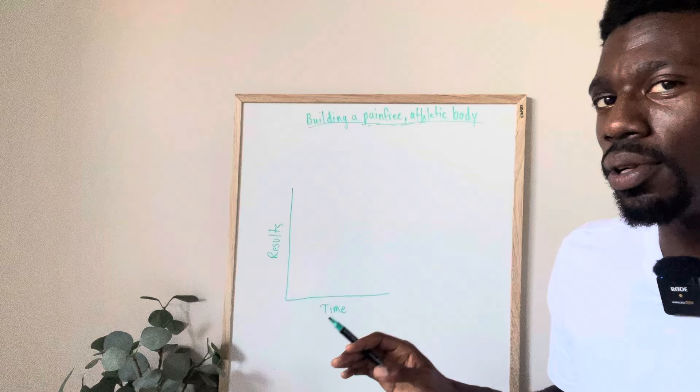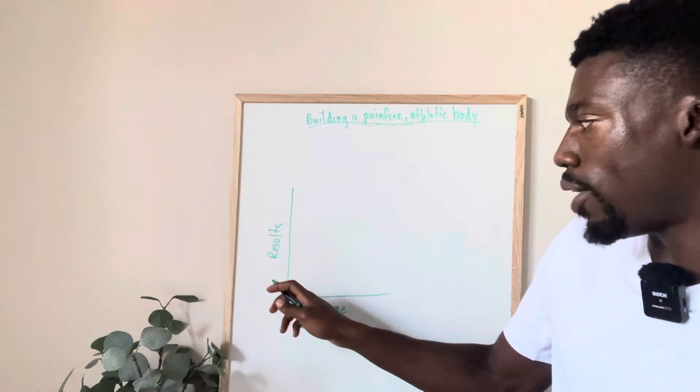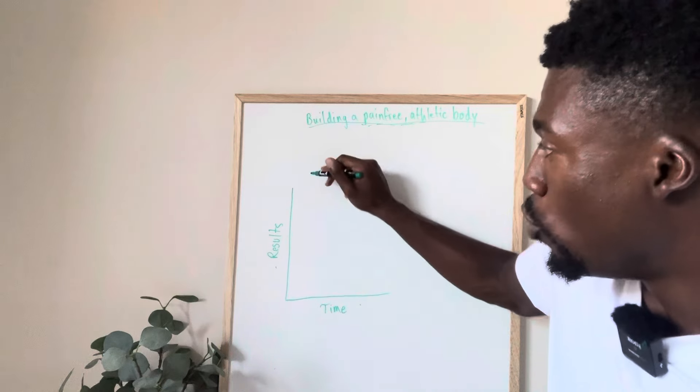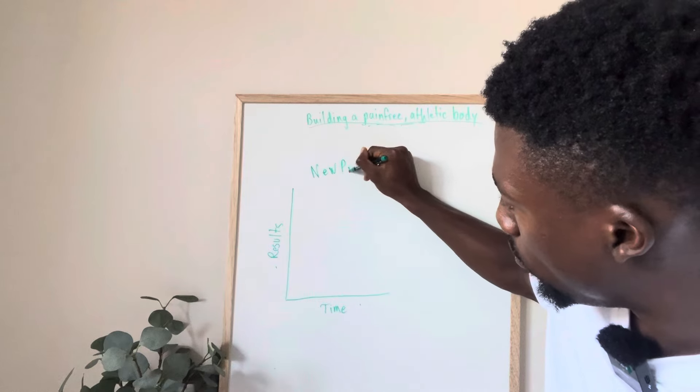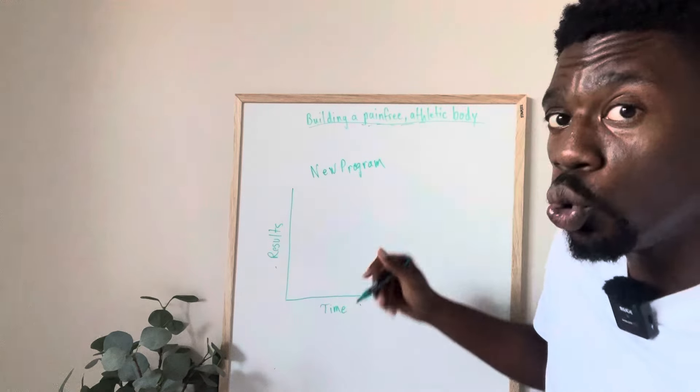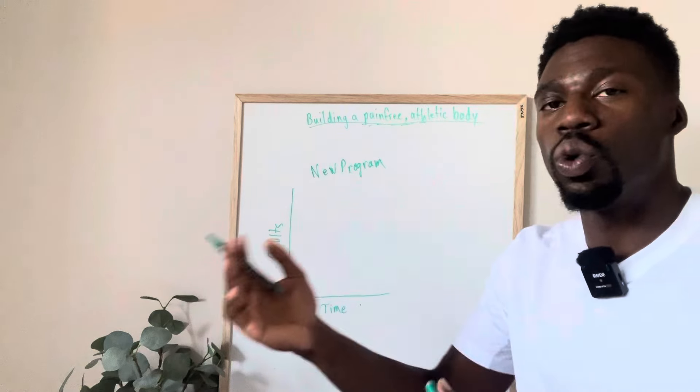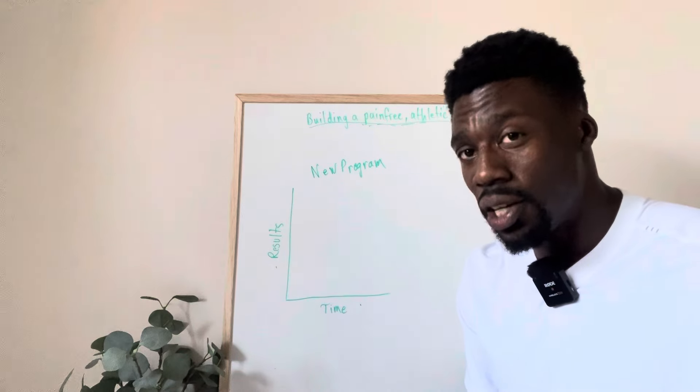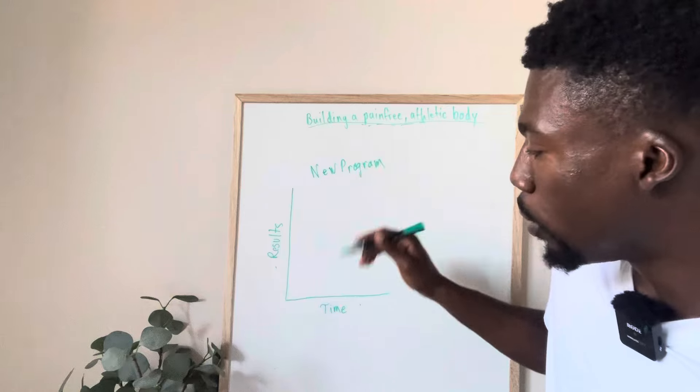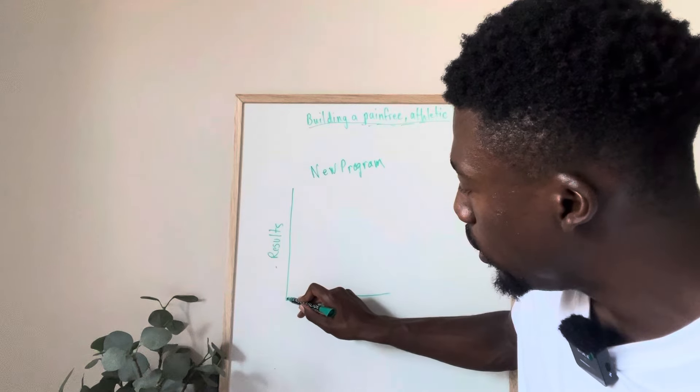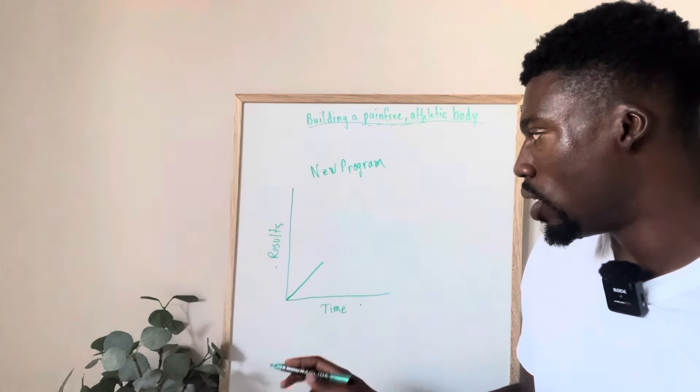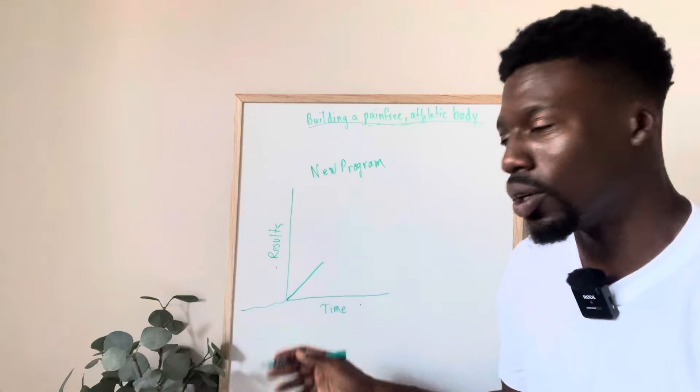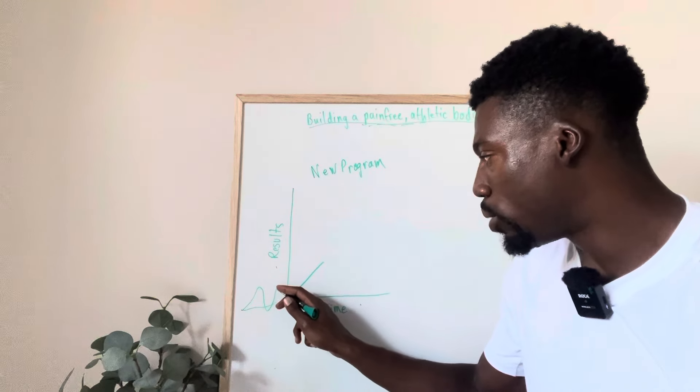What we got to understand here, first off, I'm going to break down exactly what happened. So you see this graph here, you have results on this axis, time on this axis. So what happens when somebody starts a new program or a new way of training, a new style of training, you work with a new coach, maybe you even do one of your old programs from back in college. Whatever the case may be, you start something new.